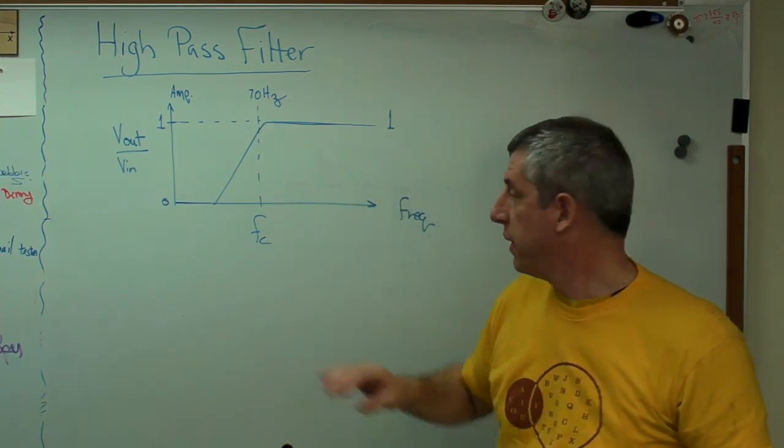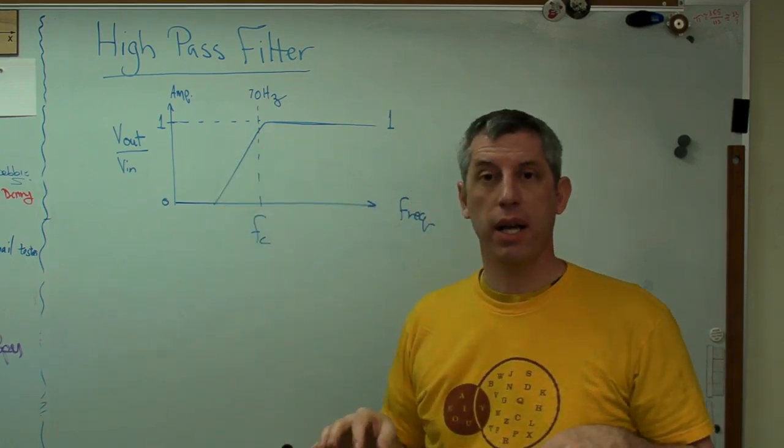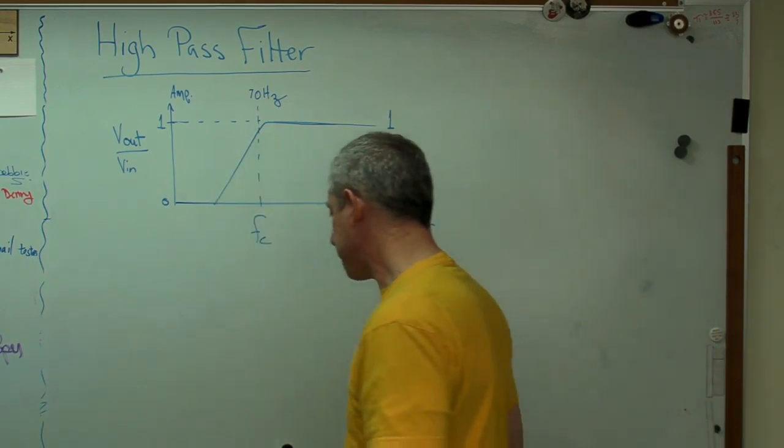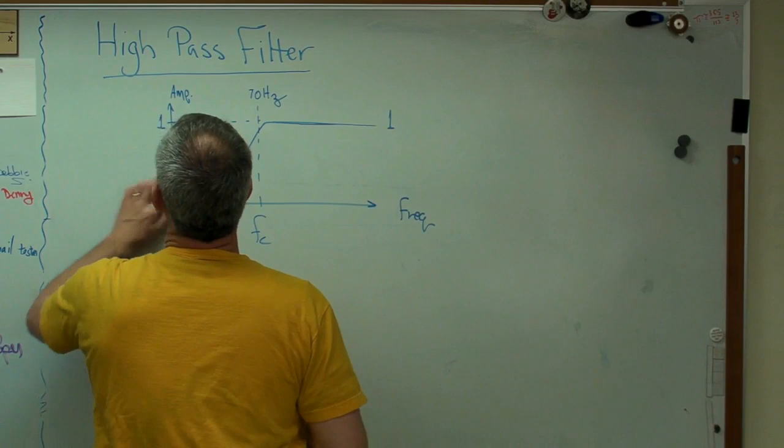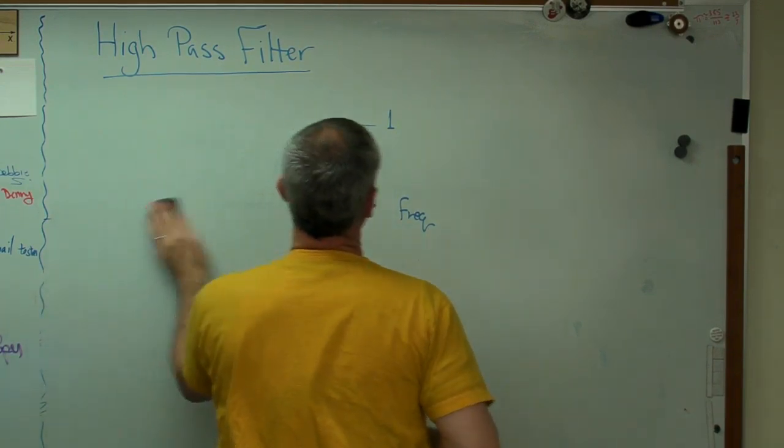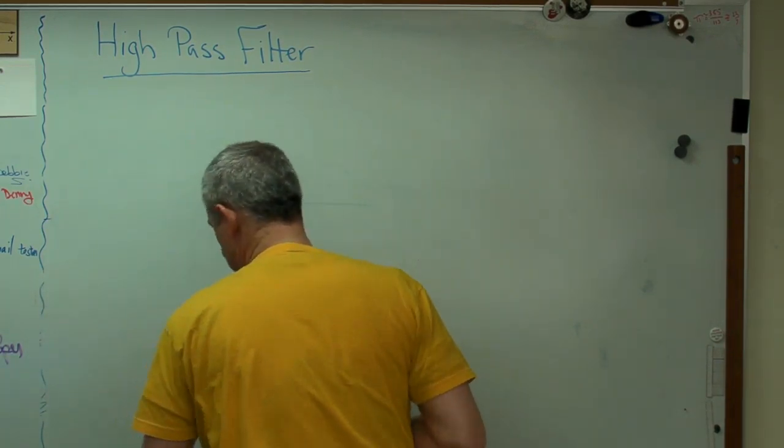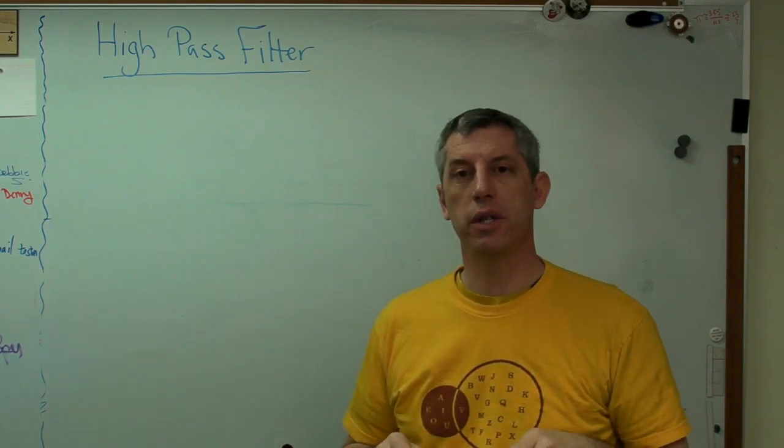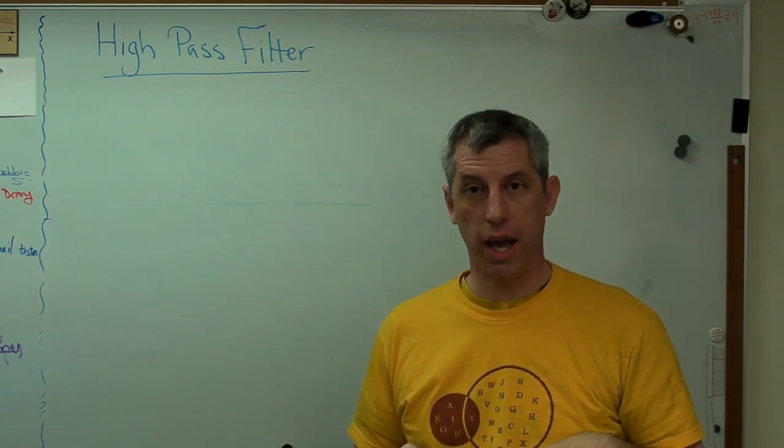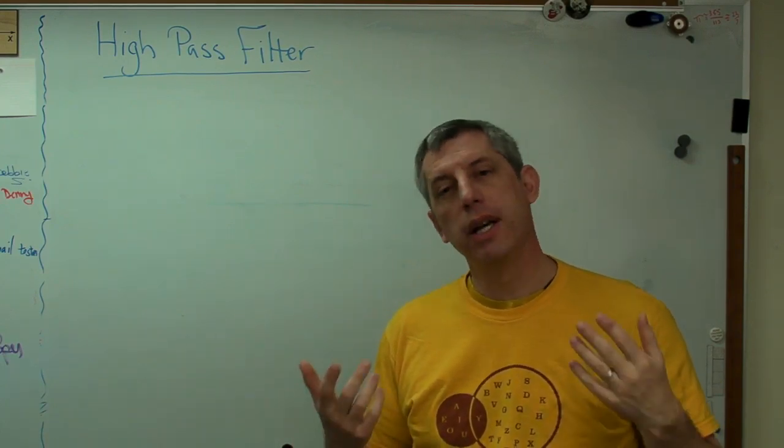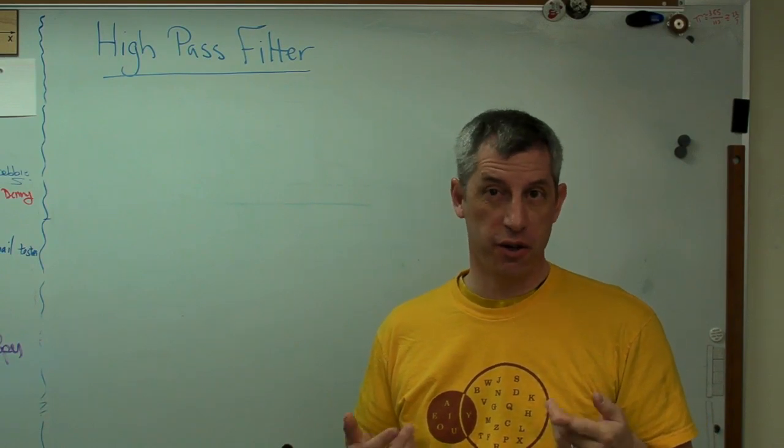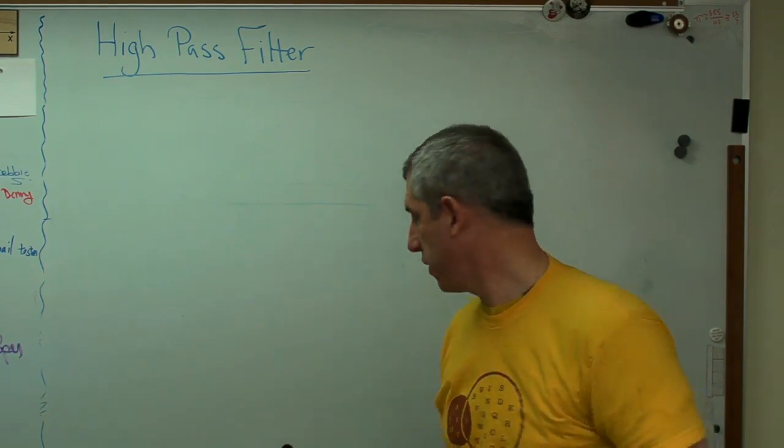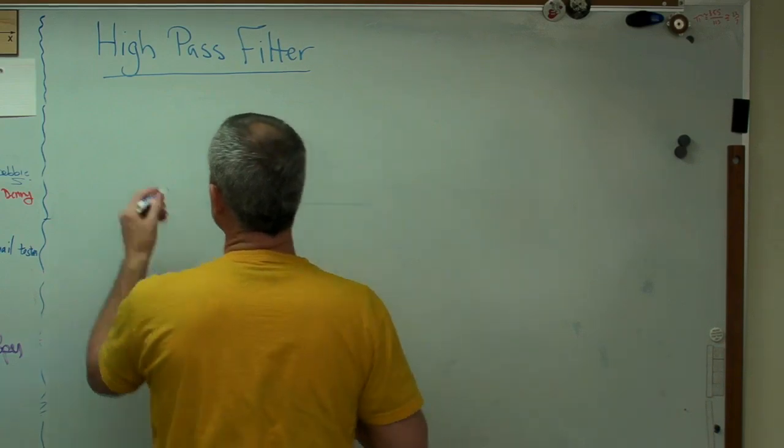Now, this is it in words. Let's talk about it in mathematical terms now. What I did before was I made a simple voltage divider, and I replaced one of the resistors with a capacitor to make a low-pass filter. Well, to make a high-pass filter, it turns out you just replace the other resistor with a capacitor. So let's start with the voltage divider.